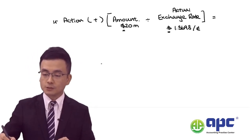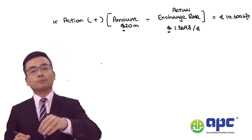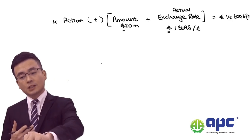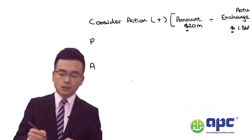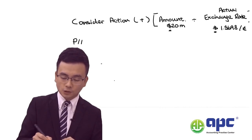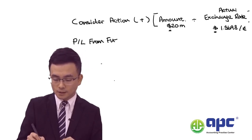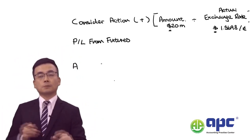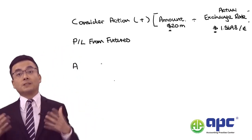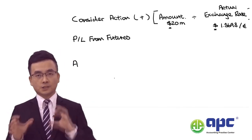So, considering the action, the total amount we can receive is €14.672 million. That would be our starting point. The next thing we need to do is calculate the profit or loss from the futures market, because there will be basis risk and related complications that we have seen before.